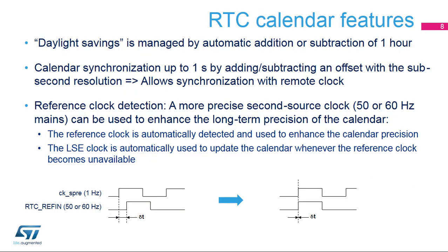This slide presents the main calendar features. Daylight savings can be managed by software with automatic one-hour addition or subtraction. It is possible to synchronize the RTC clock to a remote clock by adding or subtracting an offset to the sub-second register on the fly with CKAPRE clock resolution. This feature is commonly used in RF applications. A reference clock, mains at 50 or 60 Hz, can be used to enhance long-term calendar precision. The reference clock is automatically detected. When the 1 Hz clock becomes misaligned due to the imprecision of the LSE clock, the RTC shifts the 1 Hz clock a bit so that future 1 Hz clock edges are aligned.